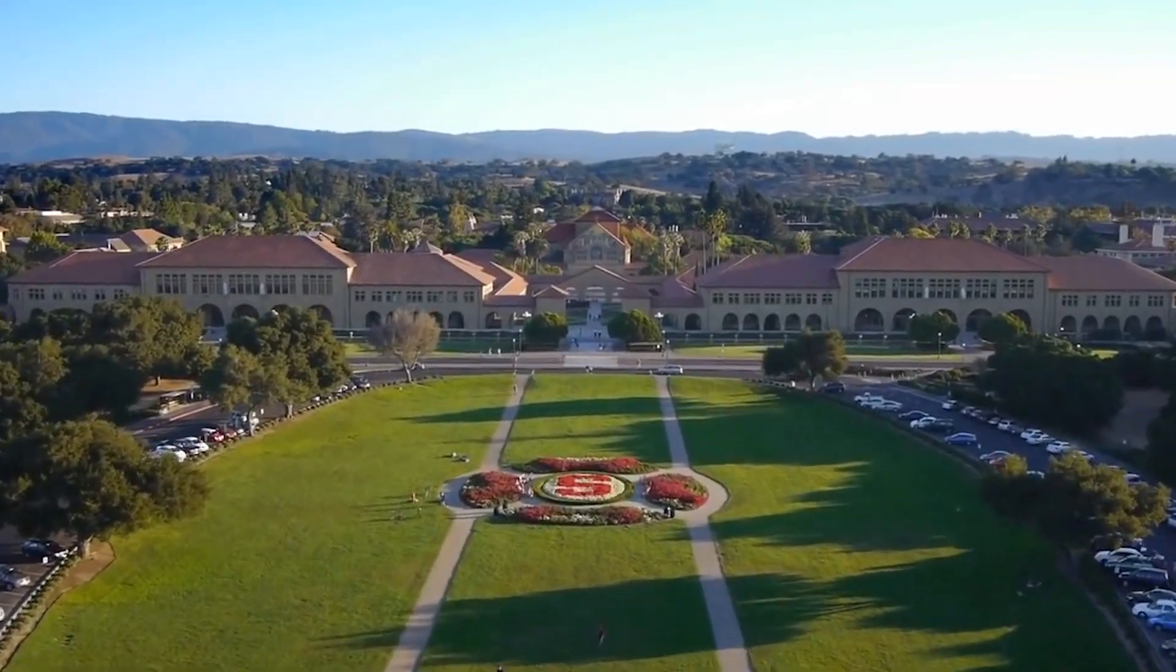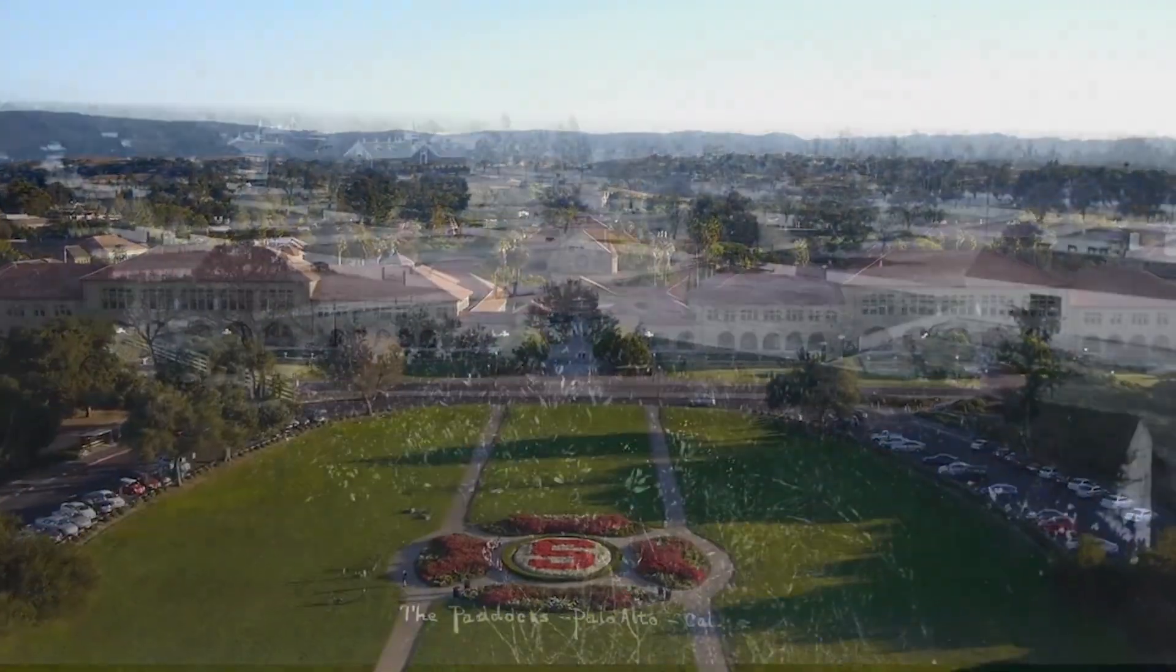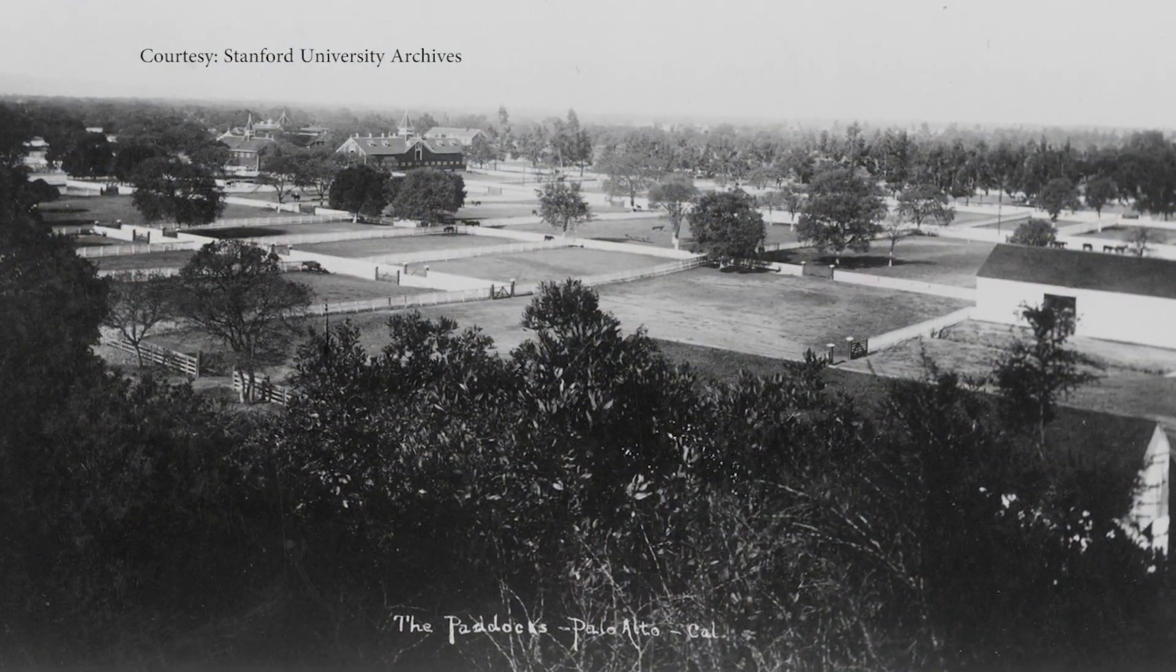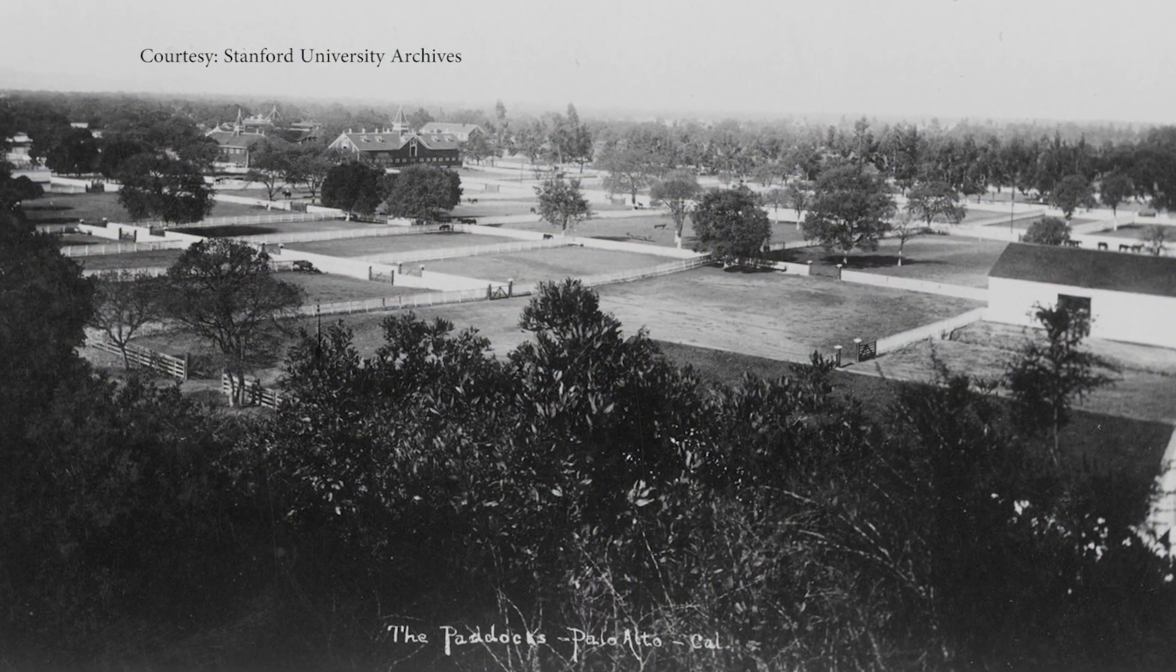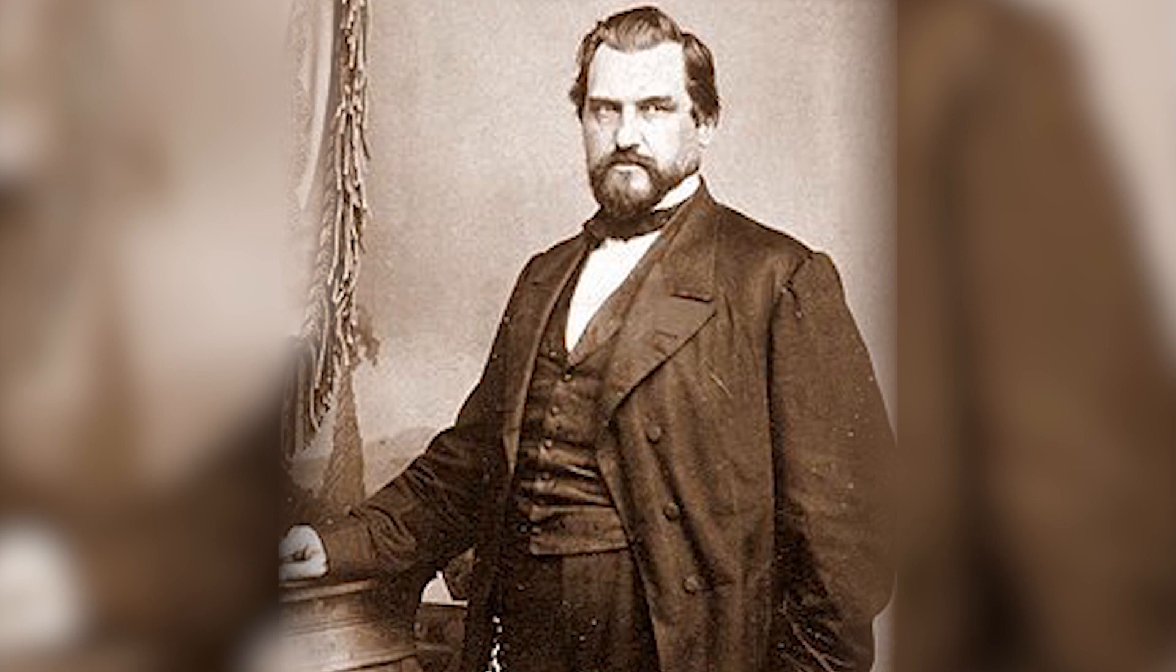In a way, slow motion movies started at Stanford. Before there was a Stanford University, this was a farm owned by Leland Stanford. He wanted to find out how racehorses run, so he hired a pioneer photographer, Edward Muybridge, to set up a string of cameras along a racetrack that had shutters triggered by the passage of the horse. And that made the first slow motion movie.